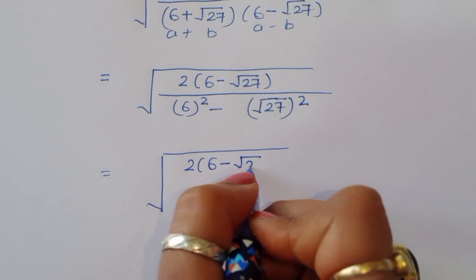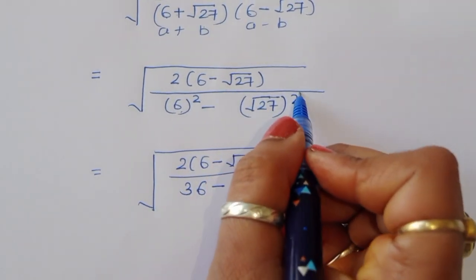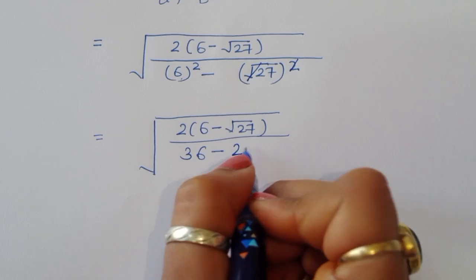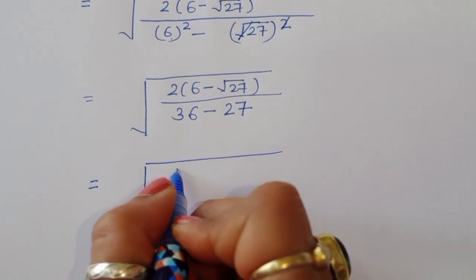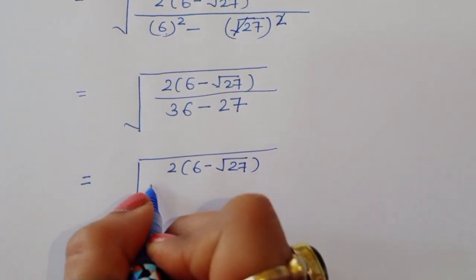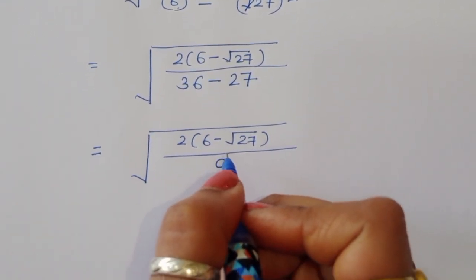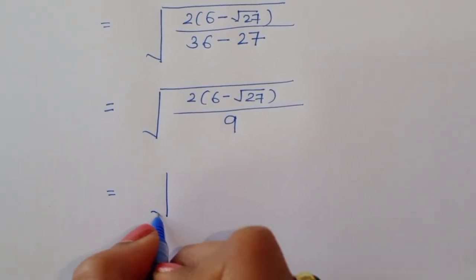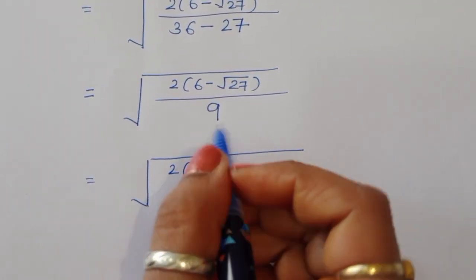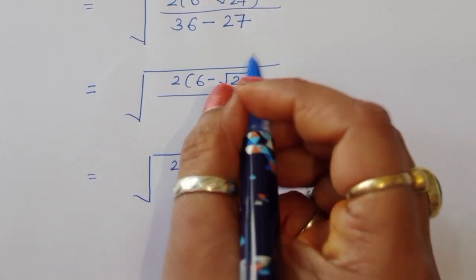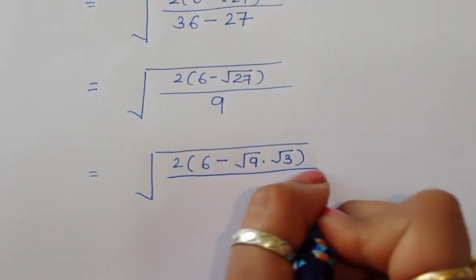So the denominator is 36 minus 27, which equals 9. We now have 2 times (6 minus square root of 27) divided by 9. Square root of 27 can be written as square root of 9 times square root of 3, which equals 3 times square root of 3.